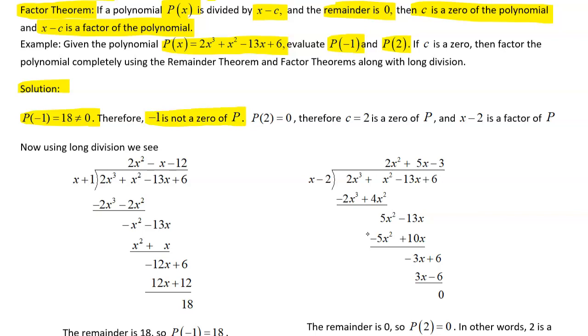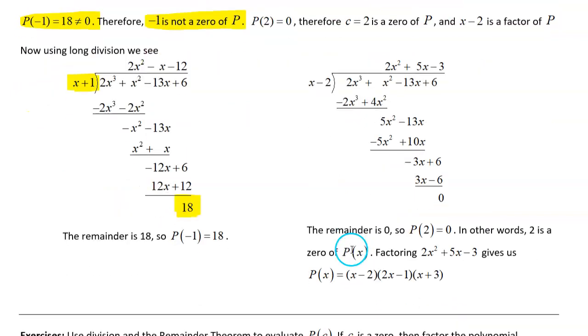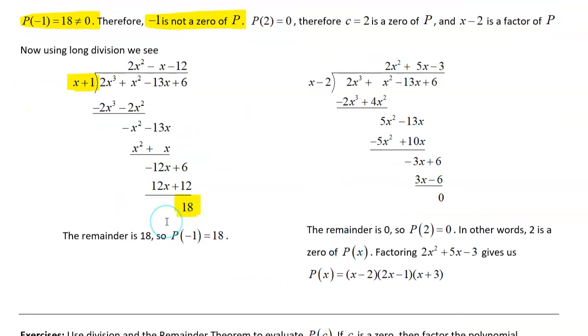Then down here they use the factor theorem, and they divided by x plus 1, and they got a remainder of 18. And once again, since you did not get a 0 here, that is telling you that x plus 1 is not a factor of p of x.